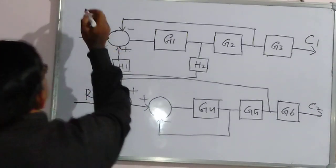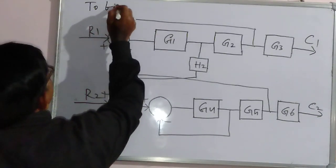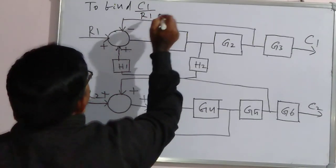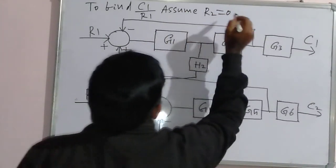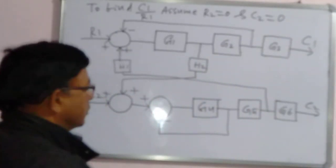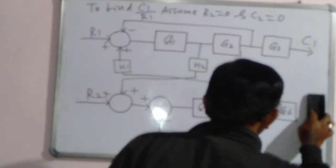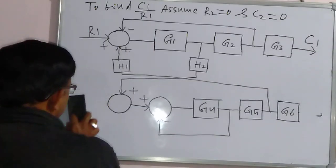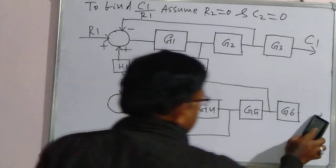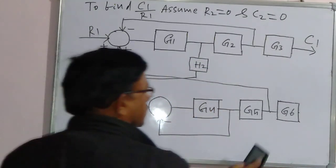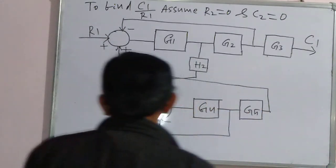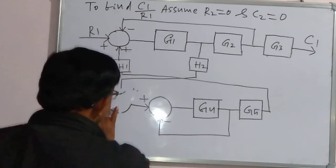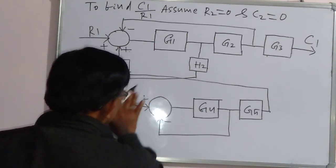To find C1/R1, assume R2 is equal to zero and C2 is also equal to zero. Therefore, you can remove C2 and R2 from the diagram. As there is no signal going to C2, therefore G6 is also removed. And here, there is no need for any comparator or summing point.